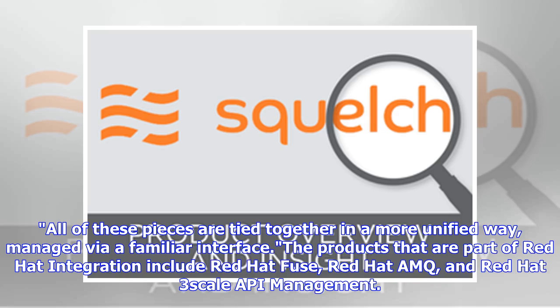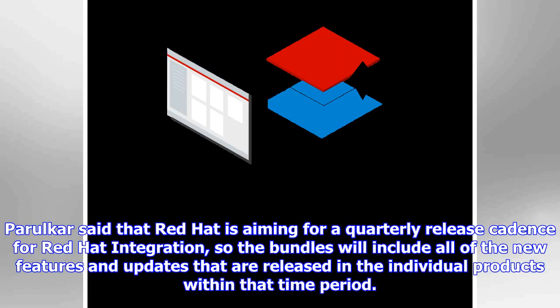Managed via a familiar interface, the products that are part of Red Hat Integration include Red Hat Fuse, Red Hat AMQ, and Red Hat 3scale API Management. Paralkar said that Red Hat is aiming for a quarterly release cadence for Red Hat Integration, so the bundles will include all of the new features and updates released in the individual products within that time period.